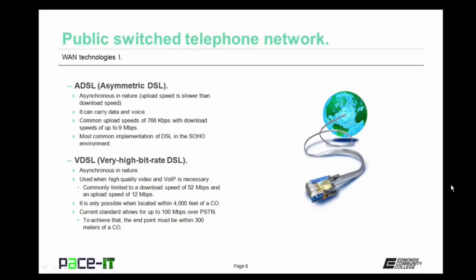Last up for DSL is VDSL — Very High Bit Rate DSL. It's asynchronous in nature and is used when high-quality video and voice over IP is necessary. VDSL is commonly limited to download speeds of 52 megabits per second with an upload speed of 12 megabits per second — much faster than ADSL. However, VDSL is only possible when you're located within 4,000 feet of a central office. The current standards do allow for up to 100 megabits per second over the PSTN using VDSL, but you must be within 300 meters of the central office.